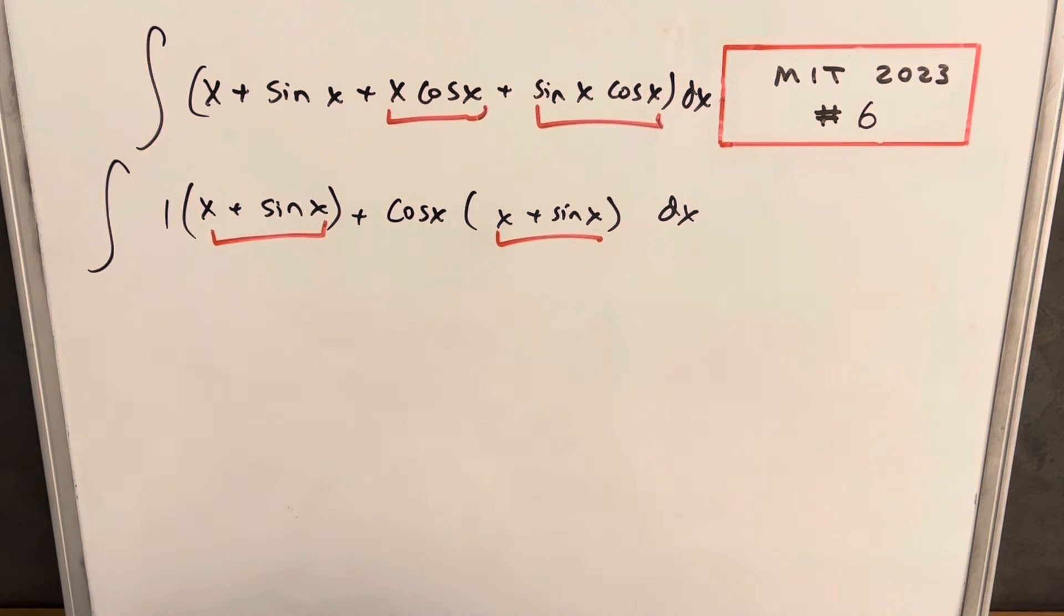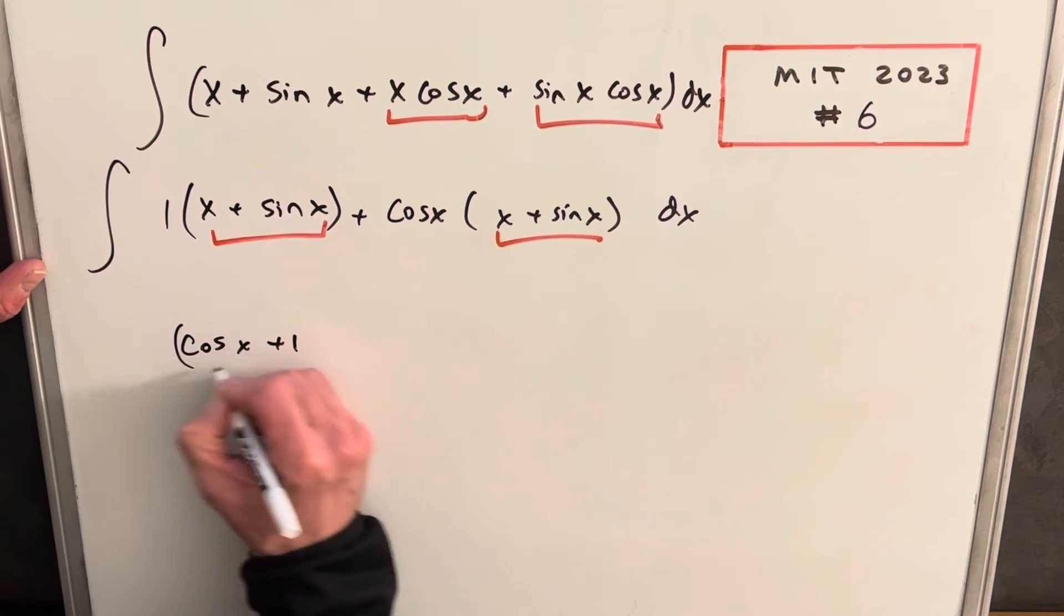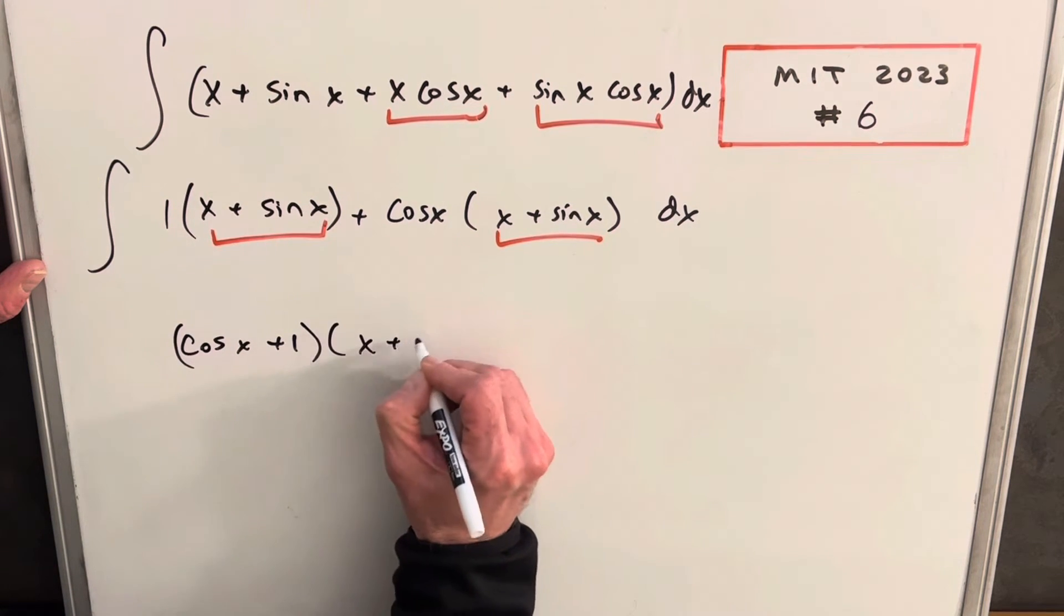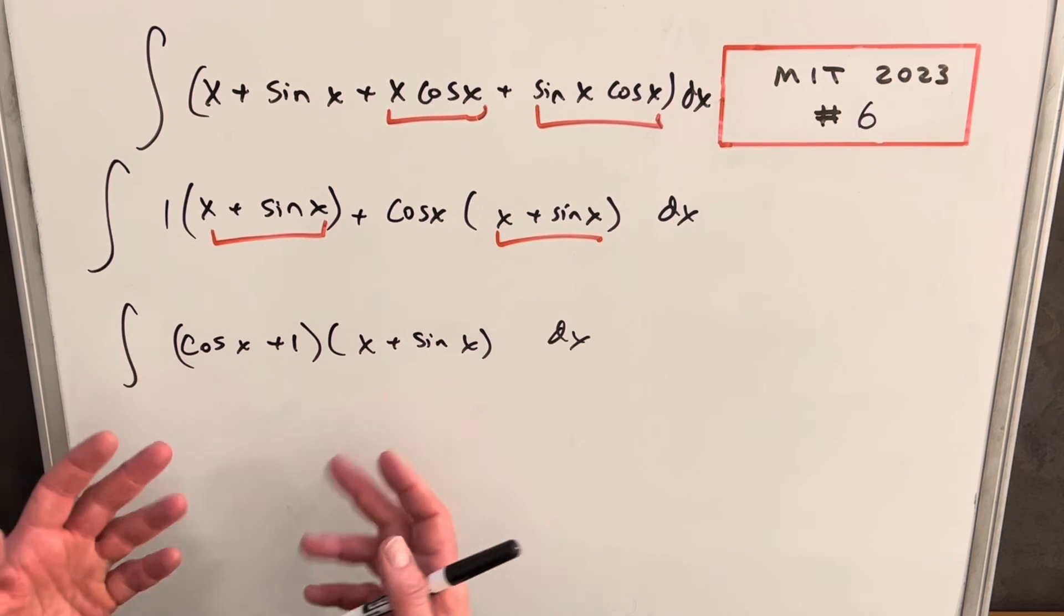So what we can do is we can rewrite this as cosine x plus one times x plus sine x dx. And then at first I was like, what do I do with this?